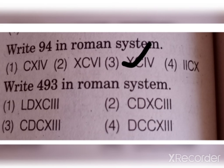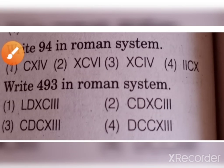Next is write 493 in Roman system. The answer is CDXCIII. This is the answer, number 2 is the answer CDXCIII. D is 500 minus C is 400. Then XC, 100 minus 10 is 90. So 493 is III. So 493 in Roman system is CDXCIII. This is the answer.